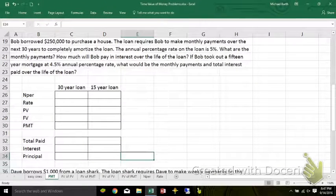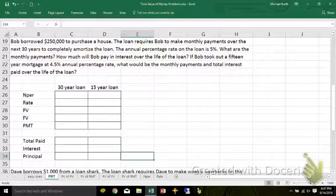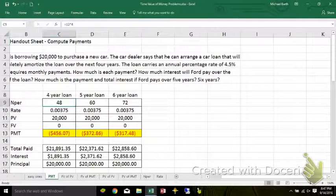All right. Bob borrowed $250,000 to purchase a house. Monthly payments over 30 years. Annual percentage rate 5%. What are the monthly payments? What do you pay in interest? If you took out a 15-year mortgage, what would be the monthly payments and the interest? Well, since I've already done this, the calculation up here, if I just copy this down, and then change what I need to change for this problem.